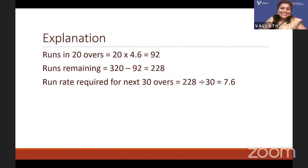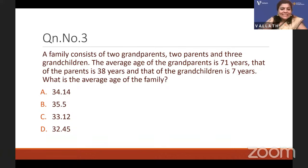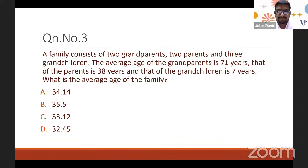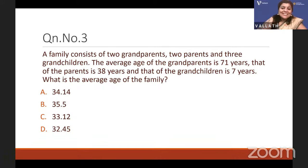Question 3: A family consists of two grandparents, two parents, and three grandchildren — seven members total. The average age of the grandparents is 71 years, of the parents is 38 years, and of the children is 7 years. What is the average age of the entire family?